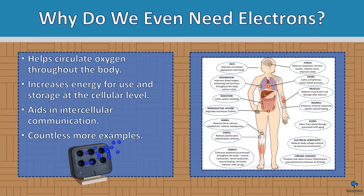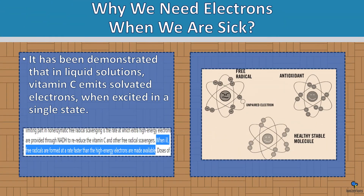So why do we even need electrons? It helps circulate oxygen throughout the body, increases energy for use and storage at the cellular level, and aids in intercellular communication — there are countless more examples. We especially need electrons when we are sick. It has been demonstrated that vitamin C emits solvated electrons when excited. When ill, free radicals form faster than high-energy electrons are made available. Vitamin C, as an antioxidant, donates its electrons — that is the sole purpose of vitamin C.